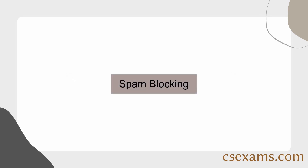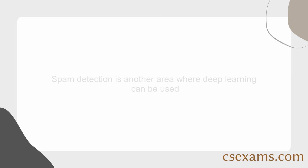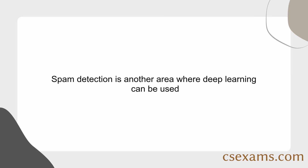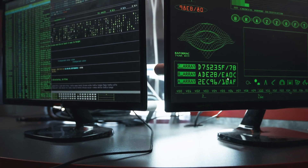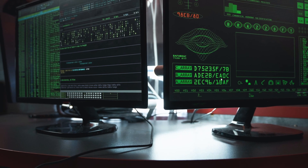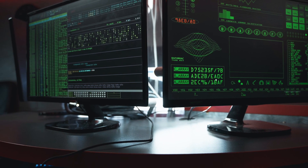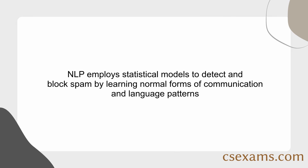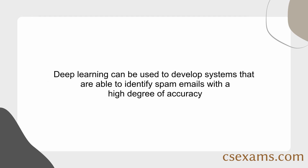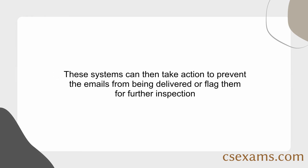Spam blocking is another area where deep learning can be used. Spam emails are a major problem for businesses and individuals alike — they can clog up inboxes and be used to spread malware or scam people out of money. Natural language processing (NLP) can aid in the detection and management of spam and other forms of social engineering, employing statistical models to detect and block spam by learning normal forms of communication and language patterns. Deep learning can develop systems that identify spam emails with a high degree of accuracy and take action to prevent delivery or flag them for further inspection.